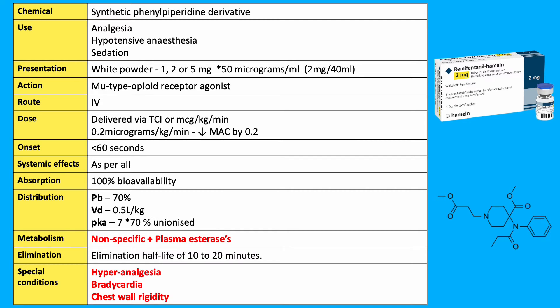It's given by an infusion pump using a TCI protocol or mcg per kg per minute, and each 0.2 mcg per ml per minute reduces the MAP by 0.2.